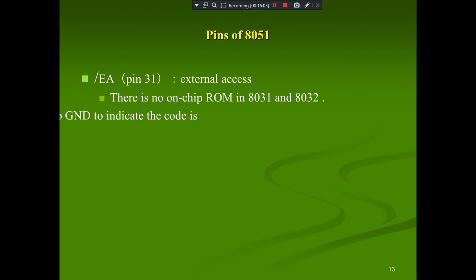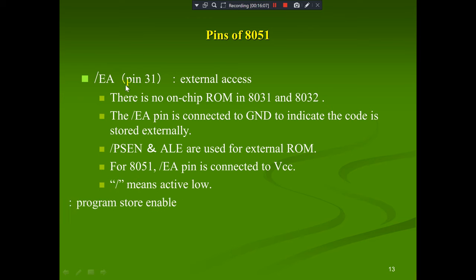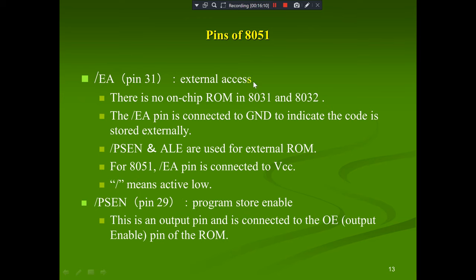Pin 31 is EA (External Access). There is no on-chip ROM in the 8031 and 8032 variants — the EA pin is connected to ground to indicate the code is stored externally. The PSEN (Program Store Enable) and ALE (Address Latch Enable) pins are used for external ROM. For the 8051, EA is connected to VCC. PSEN (active low, indicated by the bar) is an output pin connected to the output-enable pin of external ROM.